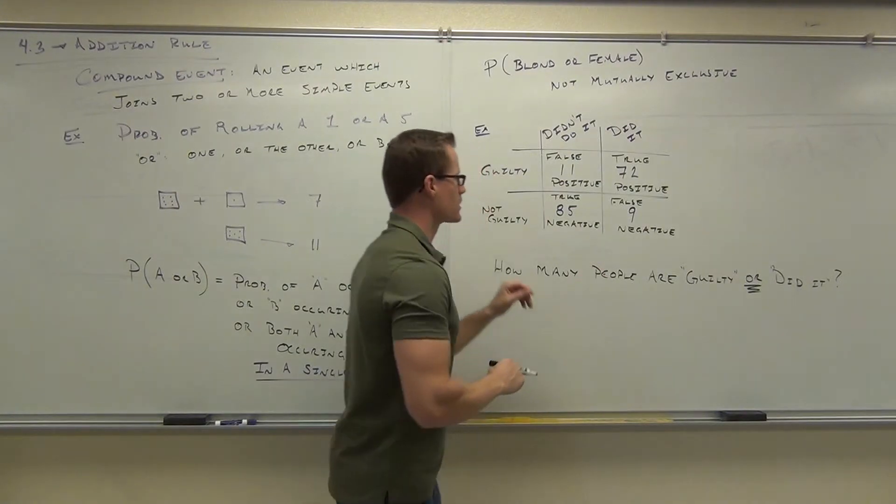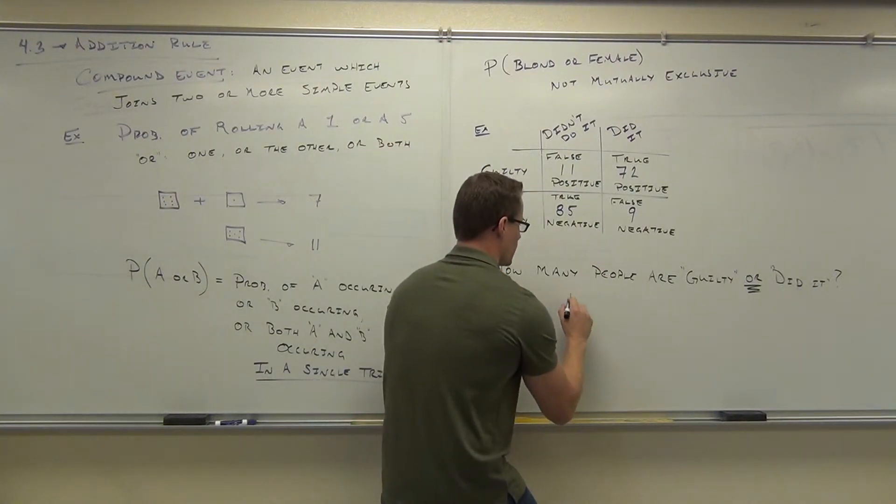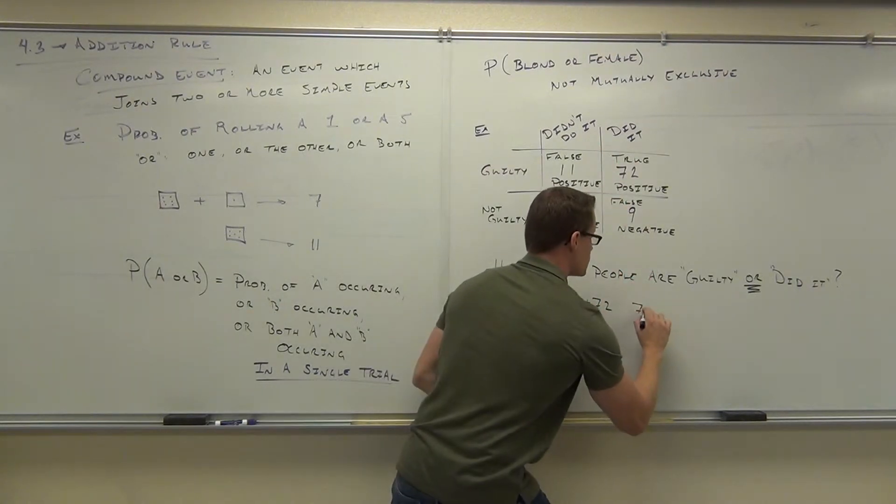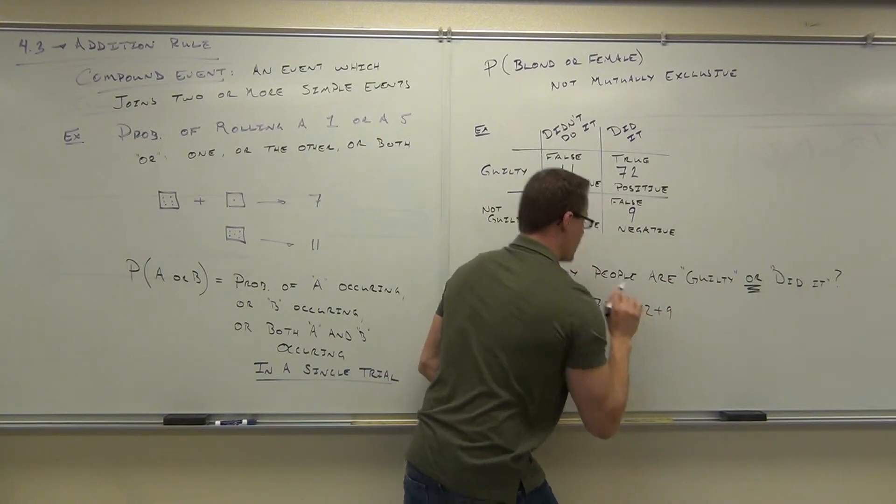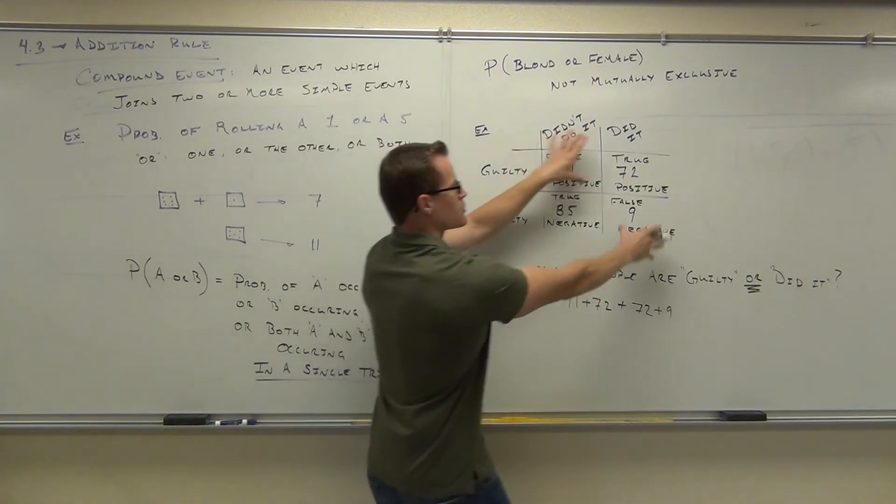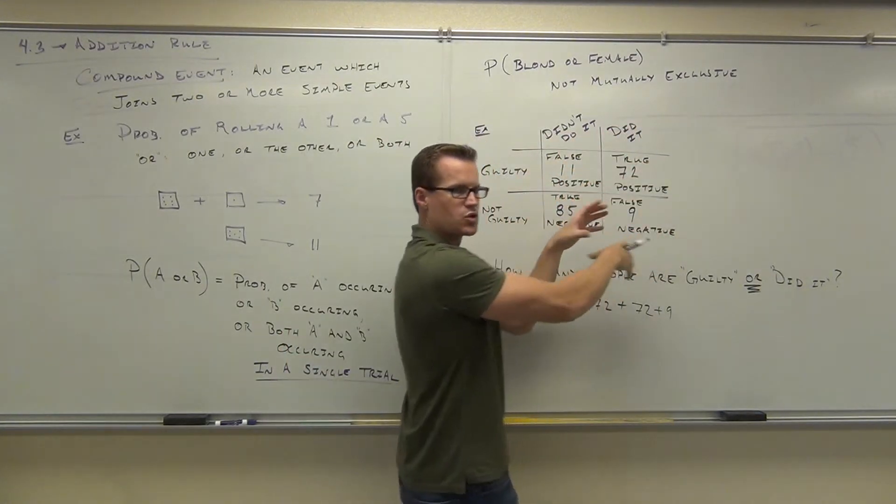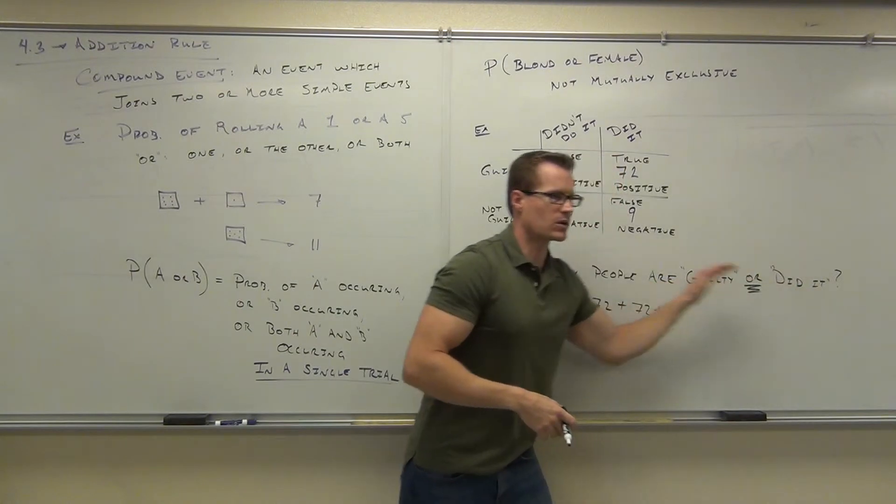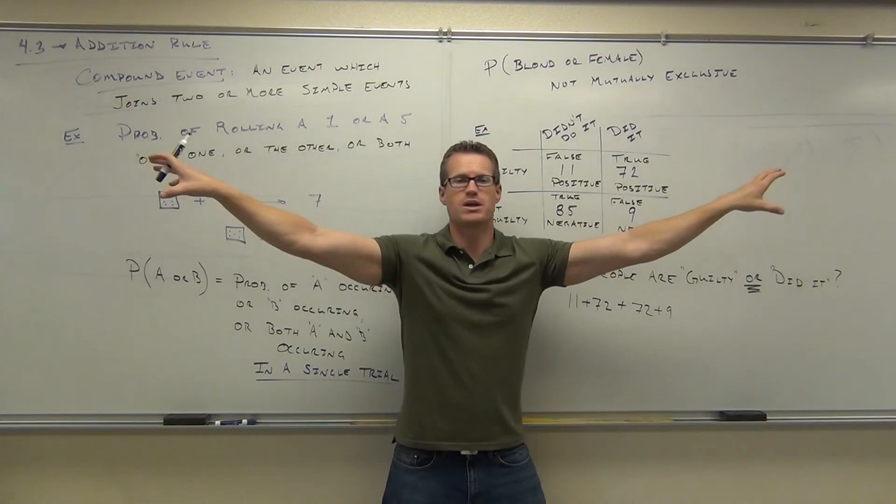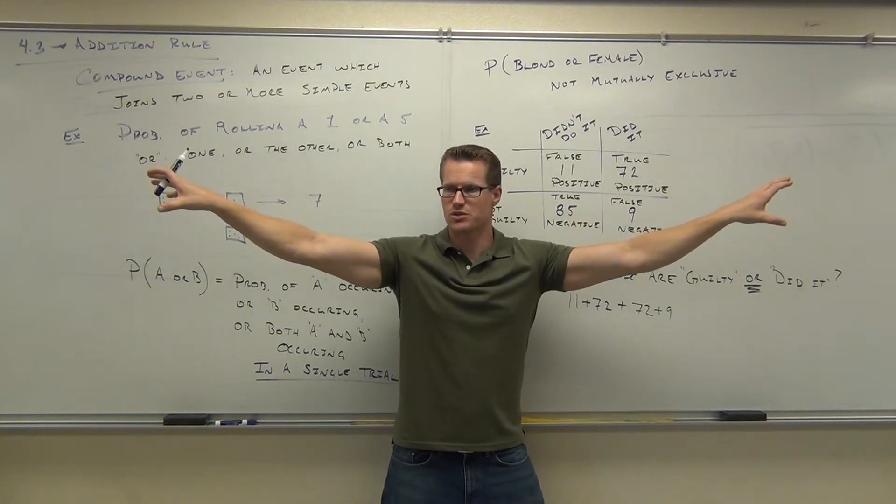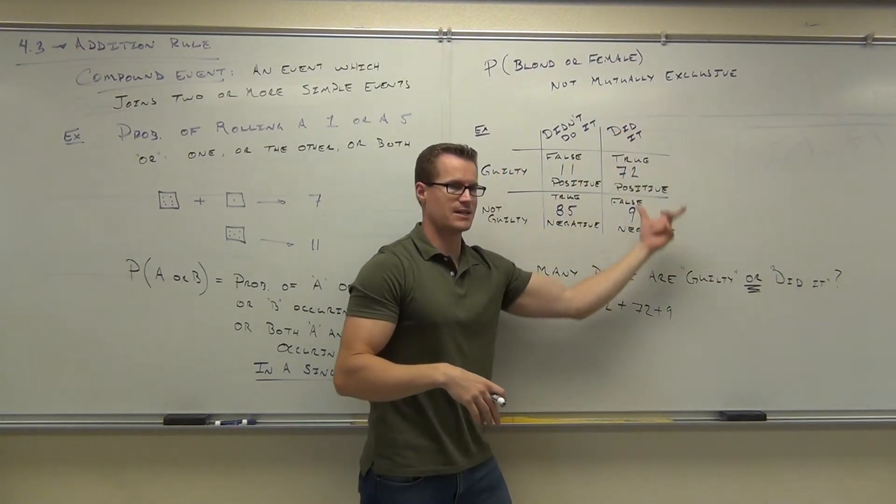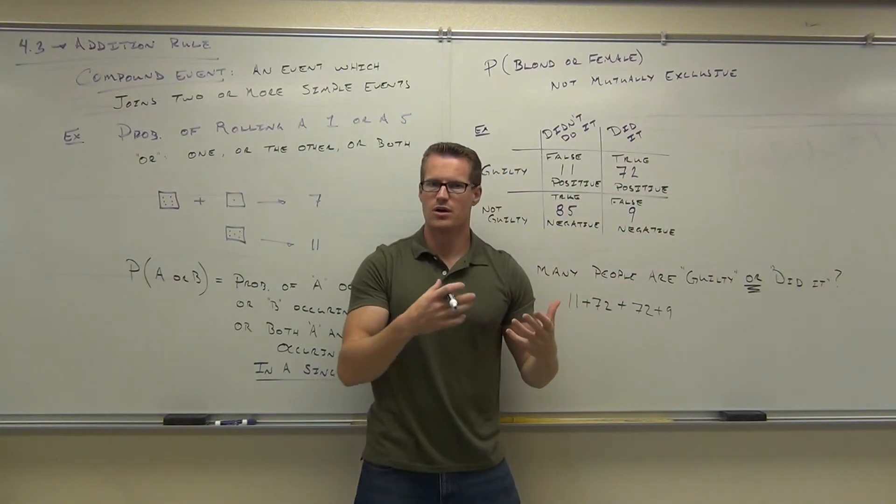What that comes down to is, do you have any crossover? So if I do this, if I say, guilty people are 11 plus 72, and did it people are 72 plus 9, and I add those, am I going to get above the number of people I'm looking for? Because I have this crossover, so is this mutually exclusive? Is guilty and did it? Are guilty and did it mutually exclusive or not? What do you think? Mutually exclusive means you cannot be in one or the other. Are they mutually exclusive? No. You can definitely be here. You can be in both the guilty and the did it column. So these are not mutually exclusive.